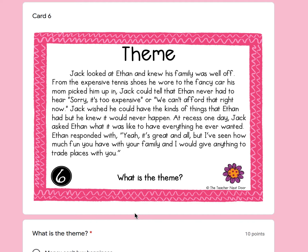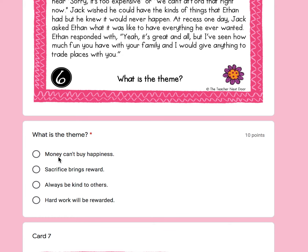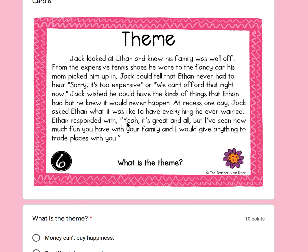Number six: Jack looked at Ethan and knew his family was well off — from the expensive tennis shoes he wore to the fancy car his mom picked him up in. Jack could tell that Ethan never had to hear, 'sorry, it's too expensive' or 'we cannot afford that right now.' Jack wished he could have all the things Ethan had, but he knew it would never happen. At recess one day, Jack asked Ethan what it was like to have everything he ever wanted. Ethan responded, 'Yeah, it's great and all, but I've seen how much fun you have with your family, and I would give anything to trade places with you.' What lesson did Jack learn? A, money can't buy happiness. B, sacrifice brings reward. C, always be kind to others. Or D, hard work will be rewarded?